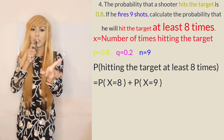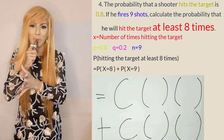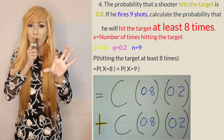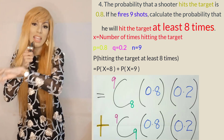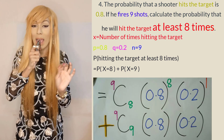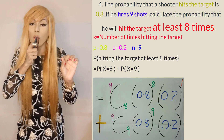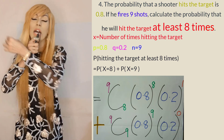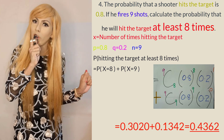This equals 9C8 × (0.8)^8 × (0.2)^(9−8) + 9C9 × (0.8)^9 × (0.2)^(9−9), which simplifies to 9C8 × (0.8)^8 × (0.2)^1 + 9C9 × (0.8)^9 × (0.2)^0. Calculate this in your calculator and you will get 0.4362.